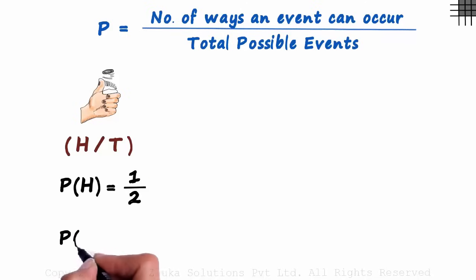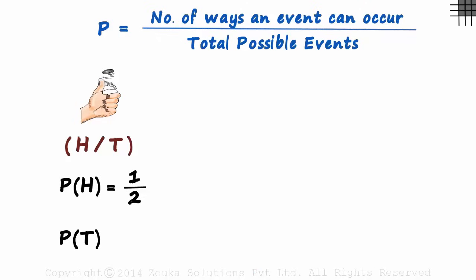What is the probability of getting a tail? There is only one way in which we can get a tail, and there are two possibilities. The probability of getting a tail at the toss of a coin is also fifty percent.